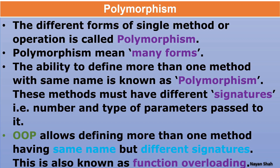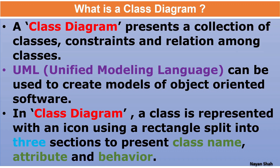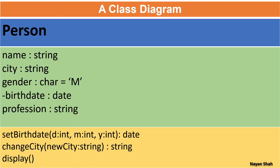The wonder is how it is possible - these methods must have different signatures. The signature of the method must be different, that is the number and type of parameters passed to it. For example, we have a setBirthDate method with three parameters D, M, and Y, and return type is date. Similarly, changeCity has one parameter newCity of string type and output is also of type string. The signature of the method is a combination of three things: the name of the method (setBirthDate), the number of parameters (D, M, Y), and the return type (date). Polymorphism says that either of these three things should be different.